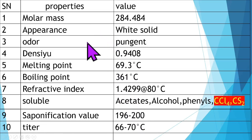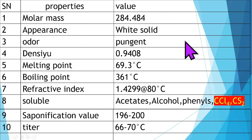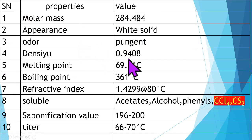Stearic Acid is one of the saturated fatty acids after Palmitic Acid, available in most vegetable oils and fats. Especially in chocolate manufacturing, Stearic Acid is the most important component. Cocoa seed and Cocoa Butter are used in the manufacturing of chocolates. This is a brief description of Stearic Acid.